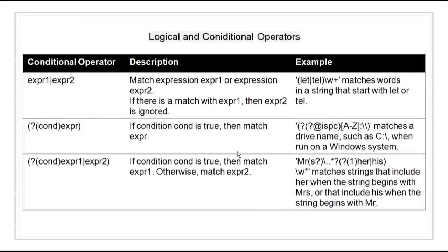Then we have logical and conditional operators. These allow us to test the state of a given condition and then use the outcome to determine which string, if any, to match next. These operators support logical OR, if, or if-else conditions, and the conditions can be tokens, look around assertions, or dynamic expressions. We have expression1|expression2 to match either; ?(condition)expression for an if condition; and ?(condition)expression1|expression2 for if-else matching.